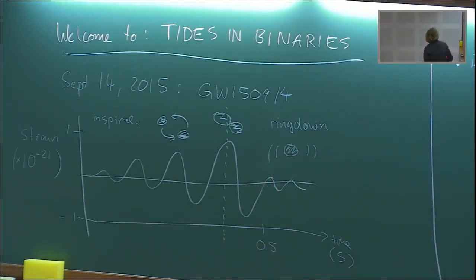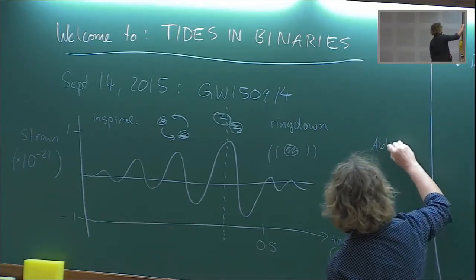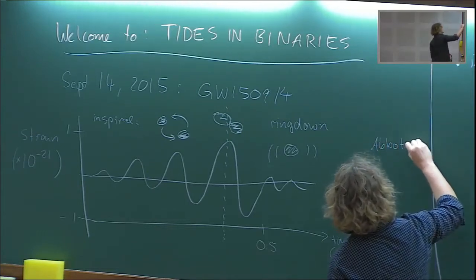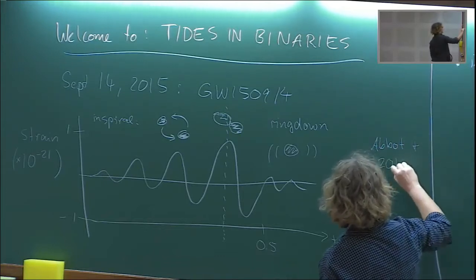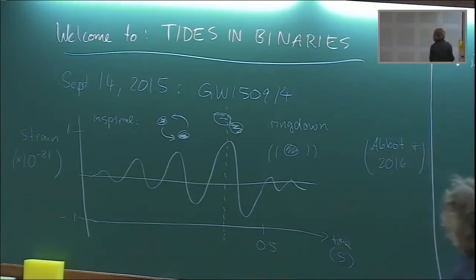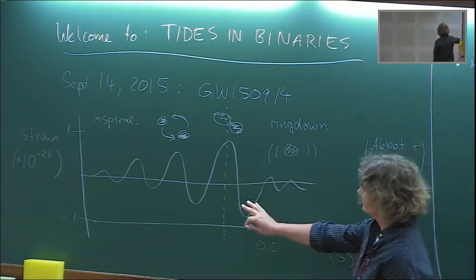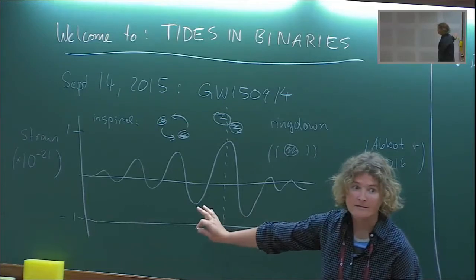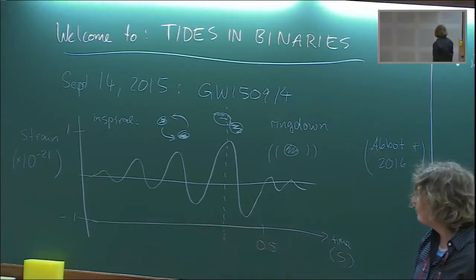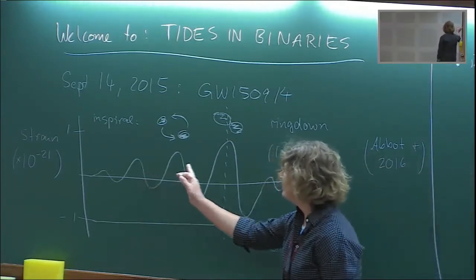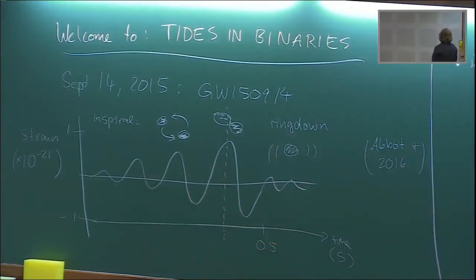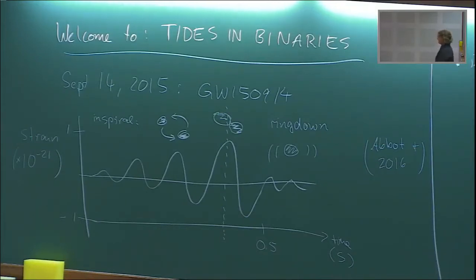The last part was the ringdown, where there was a perturbed final black hole that shed away its perturbations. Most of the details about the signal — for example, the masses and spins of these objects — comes from the inspiral, where measurements are very sensitive to the phase evolution of the system.